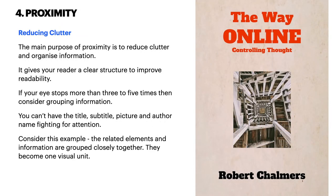Number four is proximity — reducing clutter. The main purpose of proximity is to reduce clutter and organize information, giving your reader a clear structure to improve readability. If your eye stops more than three to five times, consider grouping information. You can't have the title, subtitle, picture, and author name all fighting for attention. The related elements should be grouped closely together — they become one visual unit. Title, subtitle, image, and author name: center aligned, but grouped, because there is quite a bit of information there.